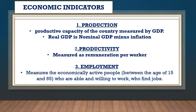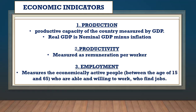The third economic indicator is employment. How is employment measured? It measures the economically active people between the age of 16 and 65 who are able and willing to work and actually do find jobs. Unemployment is the opposite — the economically active people between the age of 15 and 65 who are able and willing to work but cannot find work.